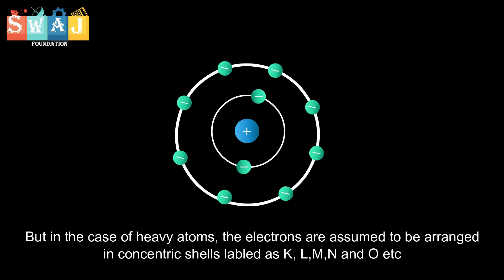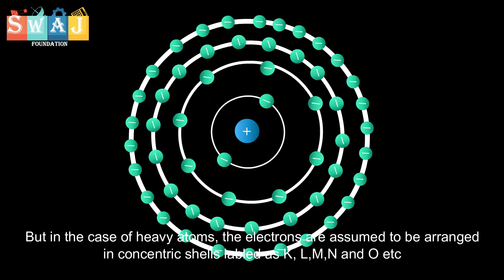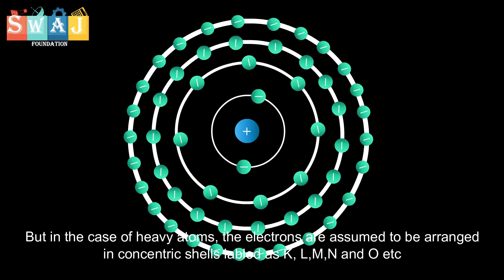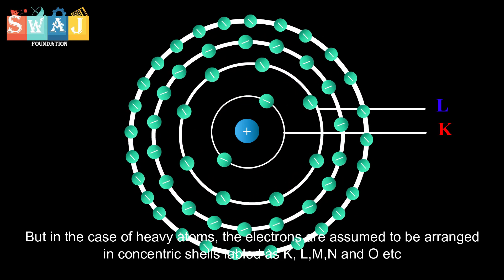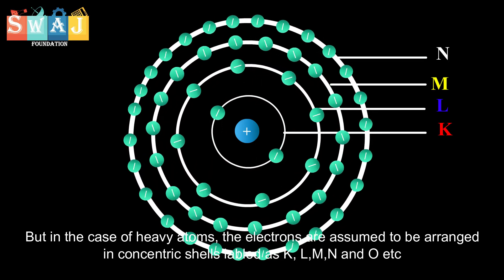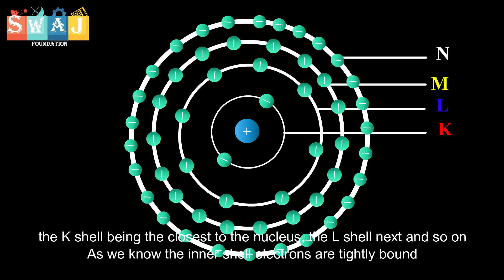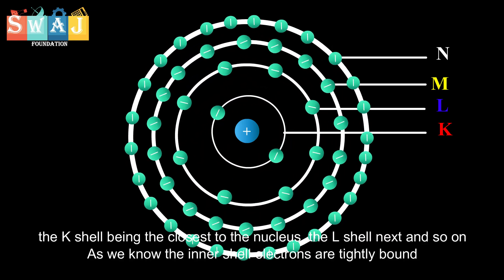But in the case of heavy atoms, the electrons are assumed to be arranged in concentric shells labeled as K, L, M, N, O, etc. The K shell being closest to the nucleus, the L shell next, and so on.